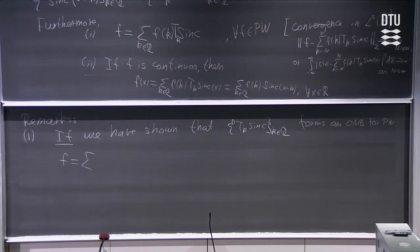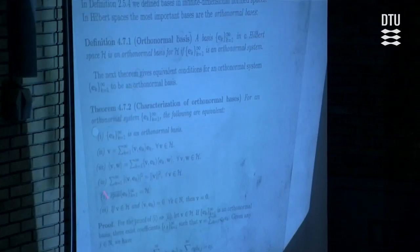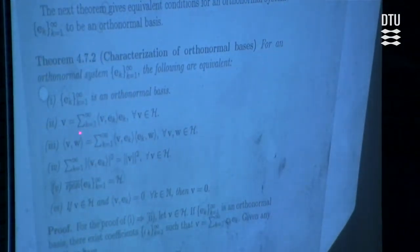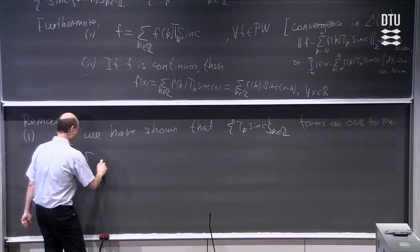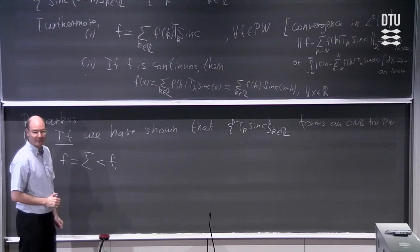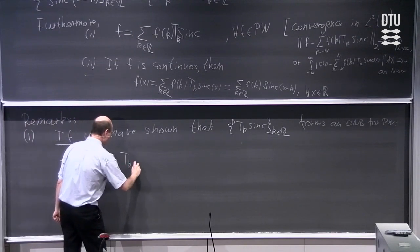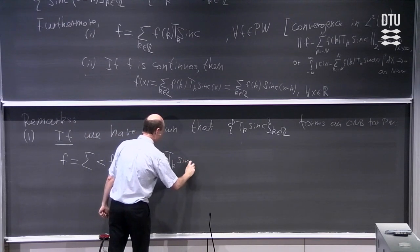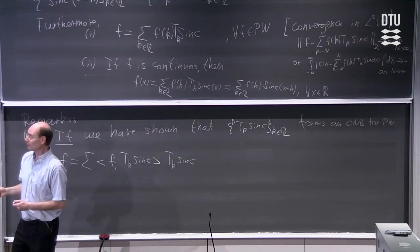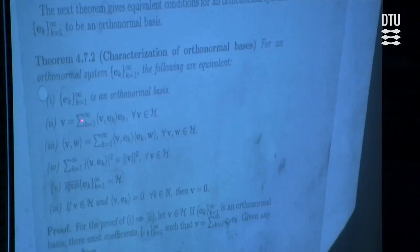If we think about our important Theorem 4.7.2, what it says is that if you have an orthonormal basis, then all elements in the space have a representation as the sum of the inner product between the element and the orthonormal basis element, times that basis element. So all f can be written as the inner product between f and T_k sinc, summed and multiplied with T_k sinc. The convergence here is in terms of the norm on the Hilbert space.